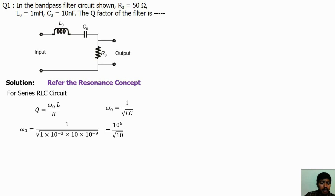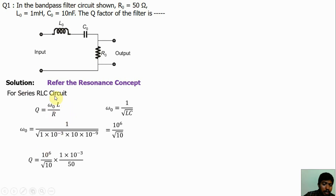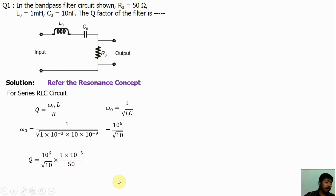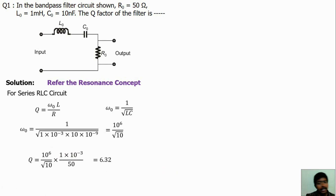Now ω₀ value, L value, and R value are all known, so we can find the quality factor by substituting these values in the Q equation. Q equals ω₀ — which is 10⁶ divided by √10 — times L value of 1 millihenry (10⁻³), divided by R value of 50. Simplifying this equation, we get quality factor Q equal to 6.32. This is the answer.